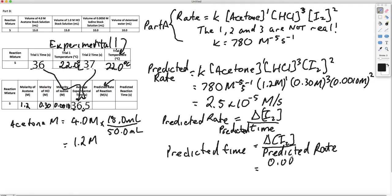The concentration of I2 is 0.0010 M. The predicted rate is 2.5 times 10 to the negative 5 molar per second. That comes out to be 40 seconds. So what does that 40 seconds represent? It represents the time that we would predict it would take for this reaction to occur. The predicted reaction rate is 2.5 times 10 to the negative 5 molar per second. The predicted reaction time is 40 seconds.